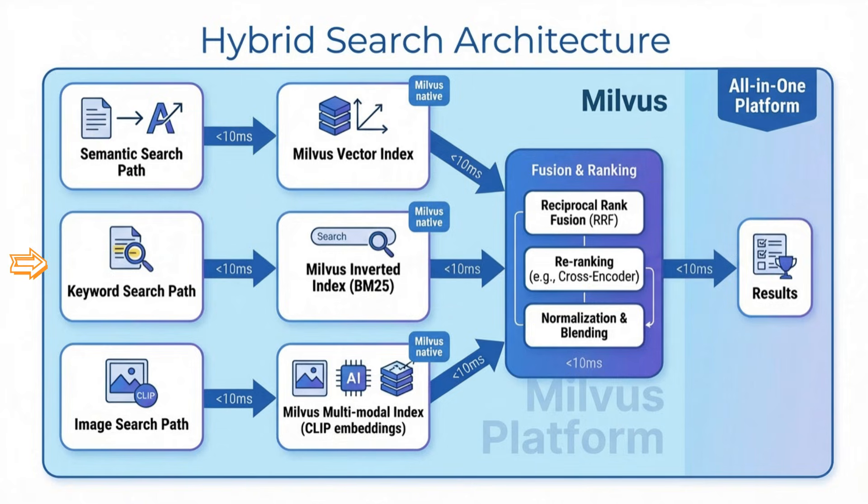Path two is keyword search — traditional full-text matching. This catches exact phrases and properties that explicitly mention your keywords rank high. Path three is image search. This is where it gets really cool: it uses CLIP embeddings to search the actual property photos for visual similarity. So 'modern kitchen' finds kitchens that look modern even if the description never uses the word.